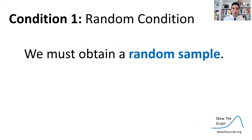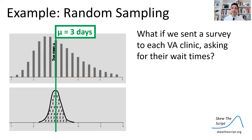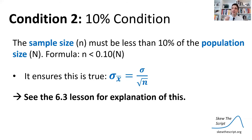Condition one is the random condition: we must obtain a random sample. If we obtain a random sample, our sample means will be centered at the true mean — we'll have an unbiased estimate. Imagine instead we sent a survey to each VA clinic asking for their wait time — a voluntary response sample. Only ones that want to respond will respond. We'd get biased estimates because clinics with long wait times probably won't respond, so our sample mean would tend to be lower than the true mean. So we need to make sure we get a random sample.